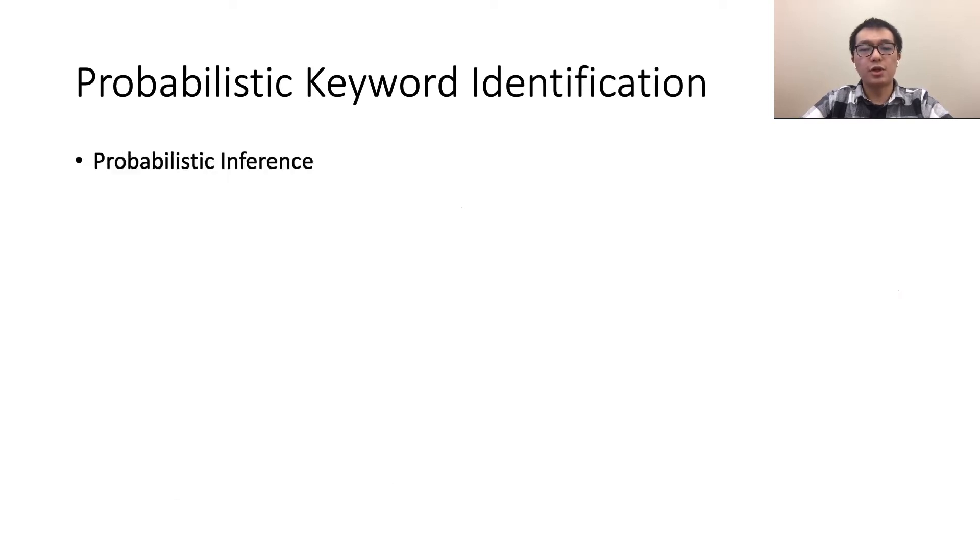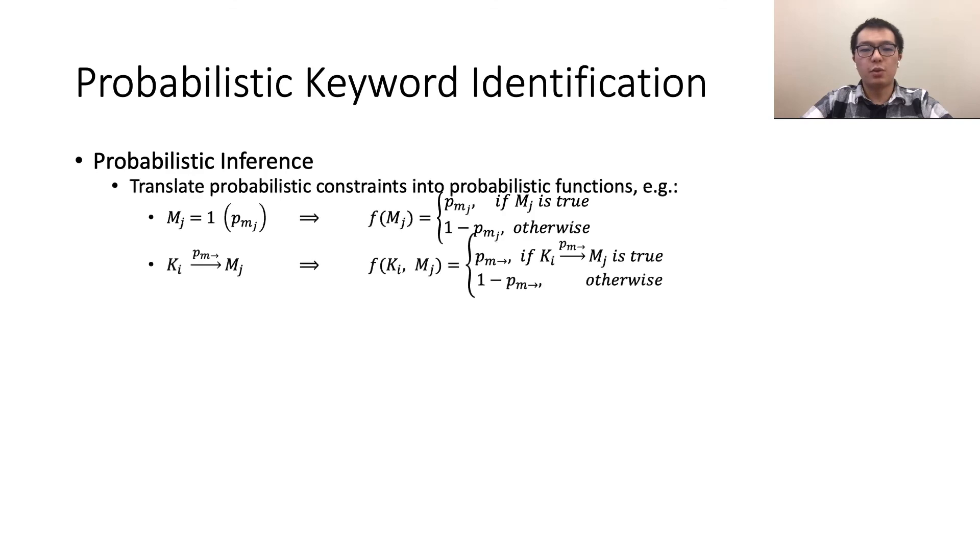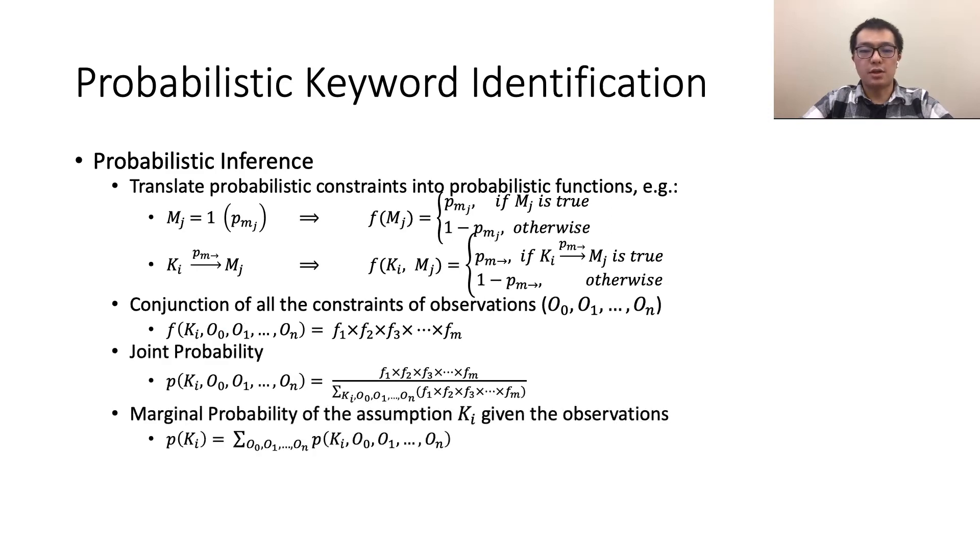After having these random variables and the constraints, we conduct probabilistic inference to consider them together. First, we translate these constraints to probabilistic functions. Then the conjunction of all the constraints can be denoted as the product of all the functions. Our interest is the marginal probability of the assumption K in the joint probability function. This value represents the probability that the candidate field is the keyword and the random variable with the largest probability indicates the most likely keyword. We leverage a general graph model called a factor graph to represent all probabilistic functions and conduct efficient computation.